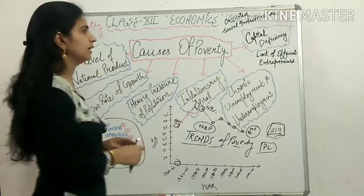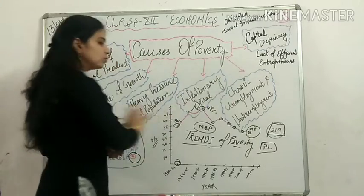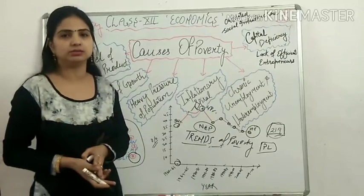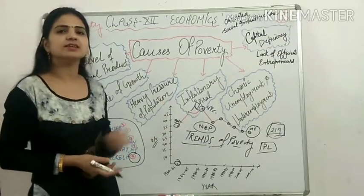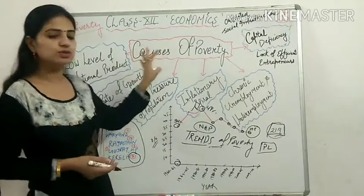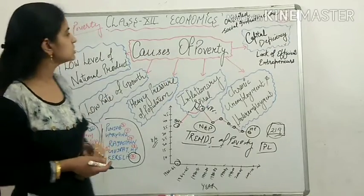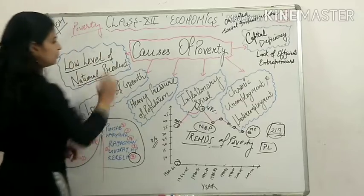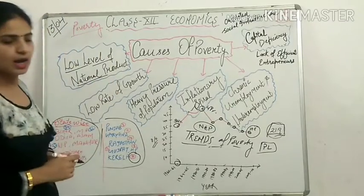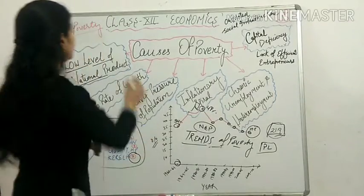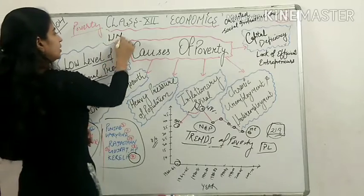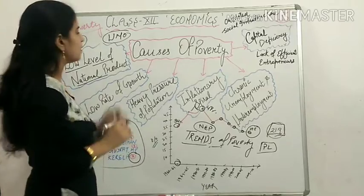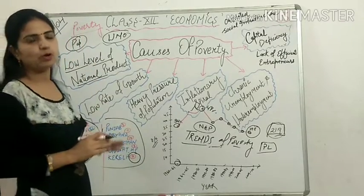Our next topic is: after 70 to 80 years of independence, why does poverty still exist in India? What are the main causes of poverty? The first cause is the low level of national product. According to UN reports, our GDP per capita is very low, and because of high population growth, even when our national product grows, we are still facing the problem of poverty.